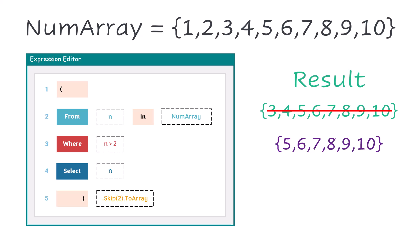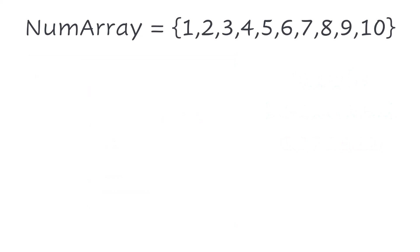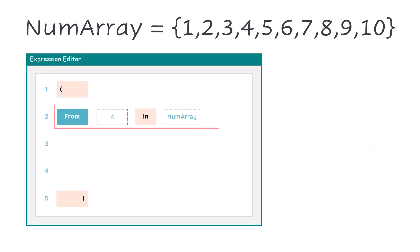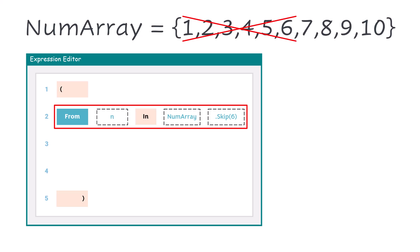But we can also use the function to filter the data within the query. Let's see the following query. I have again the same array and the following query. I first have a FROM statement where I use the Skip function. What happens here in the statement? We skip the first 6 items in the array.